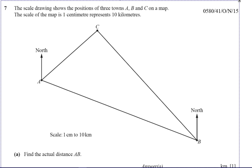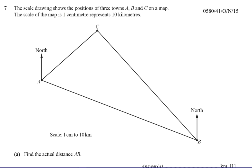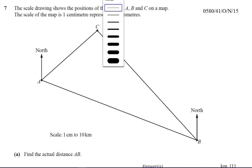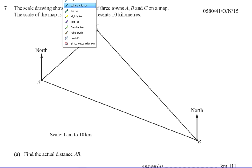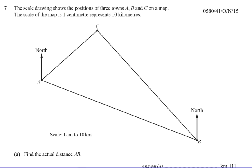The first part of the question tells us that we have a scale drawing. It shows the position of three towns, A, B and C on a map. The scale of the map is one centimeter represents 10 kilometers.